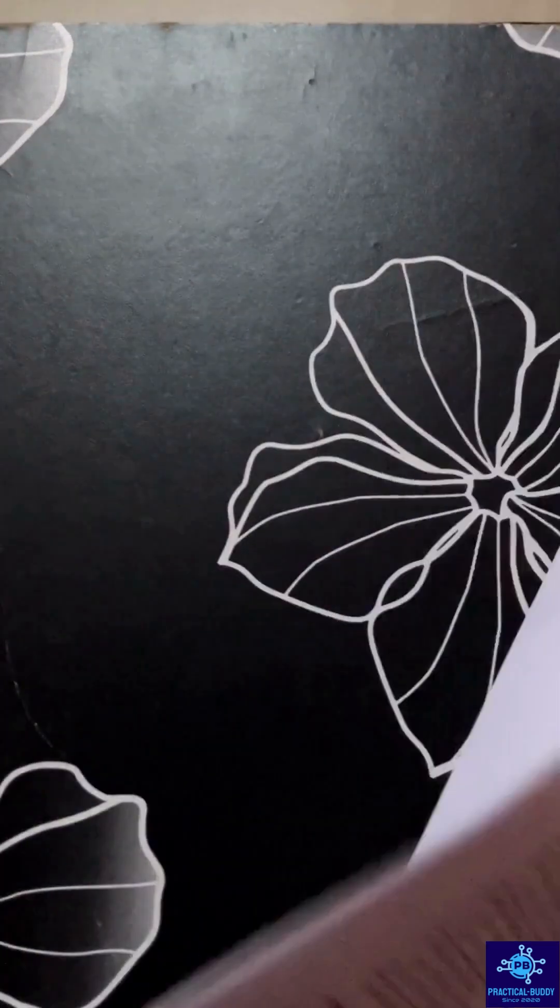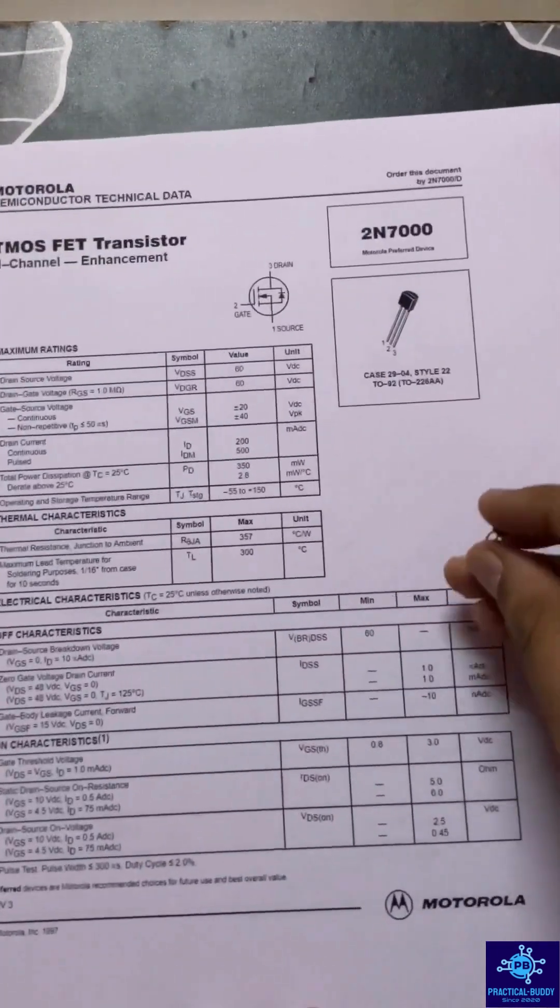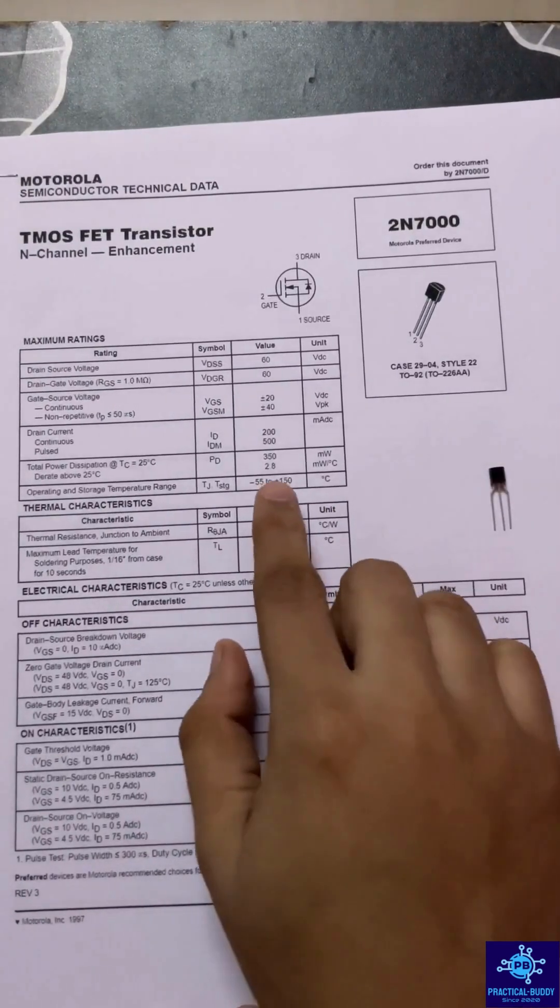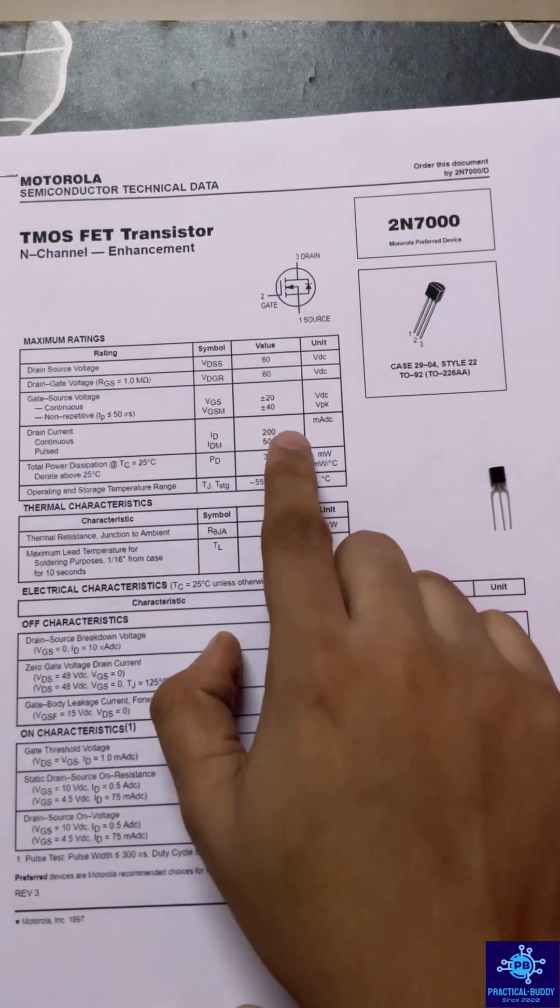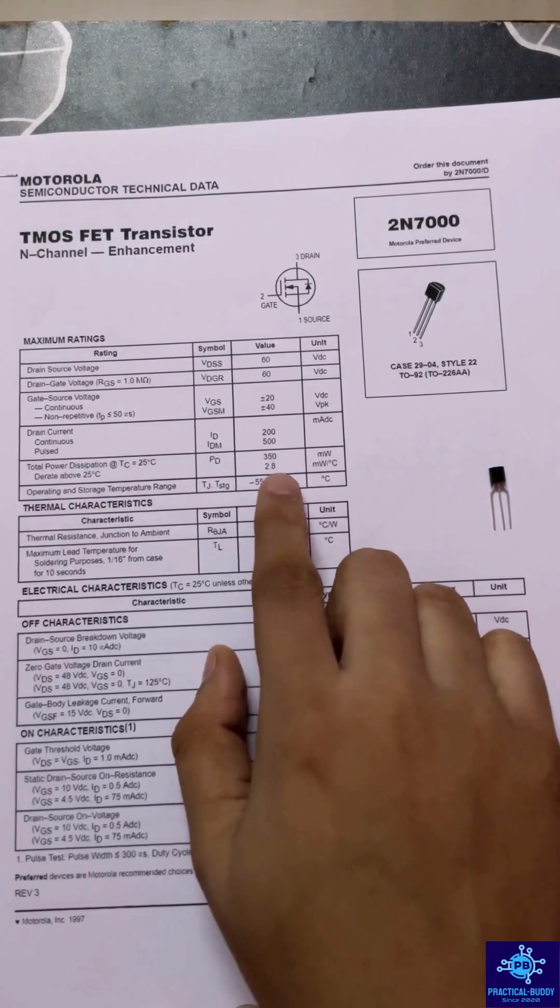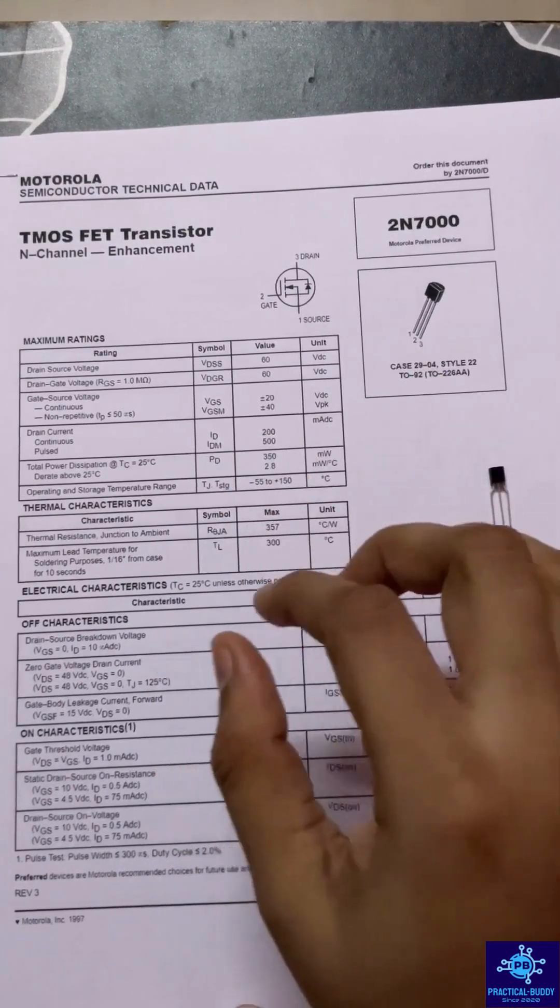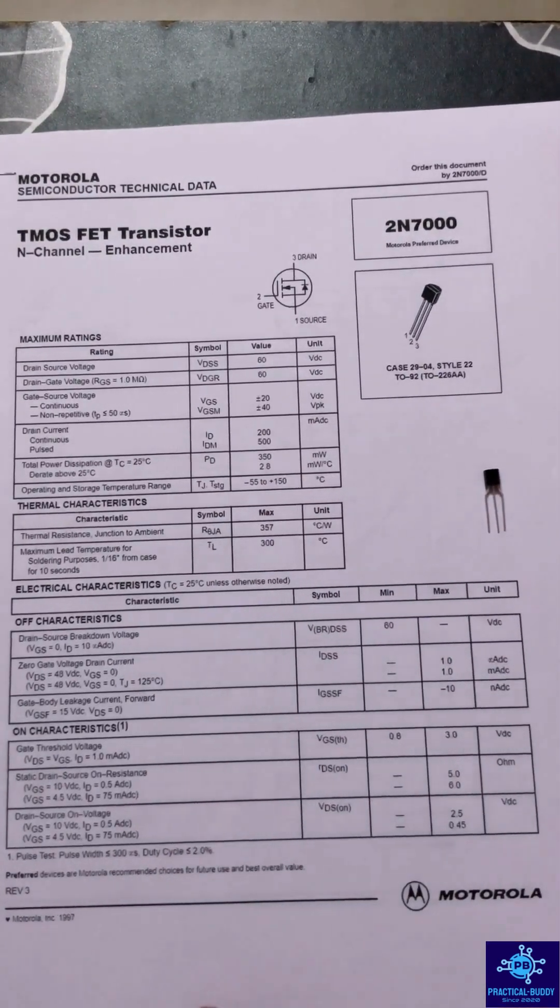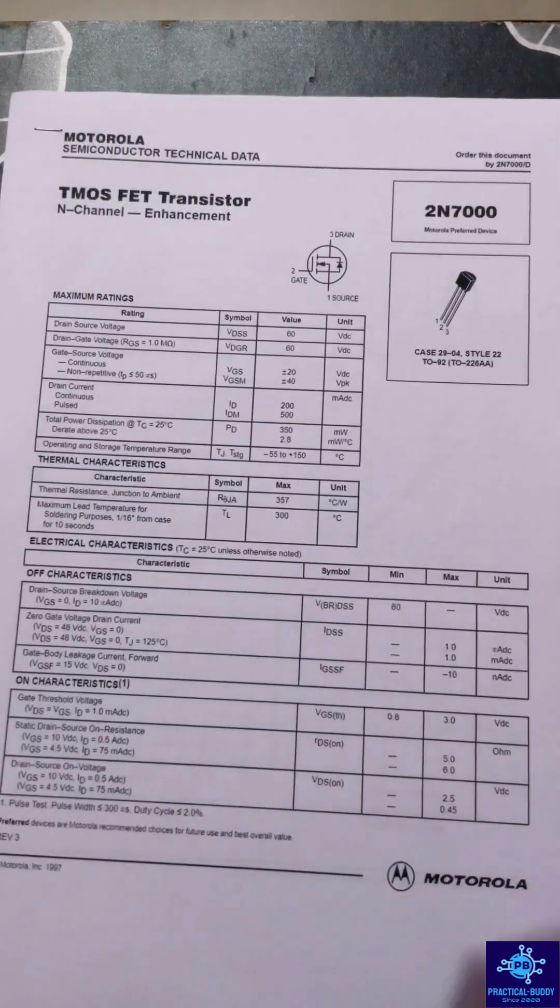Now let's see the datasheet of 2N7000. You can clearly see in the datasheet they have mentioned that it can handle current up to 200mA, whereas power dissipation would be around 250mW. On the contrary, if you see the datasheet of IRF540,